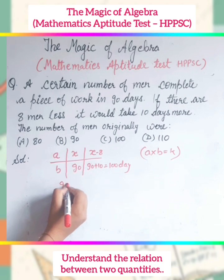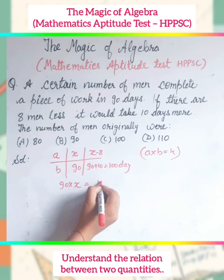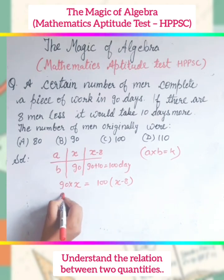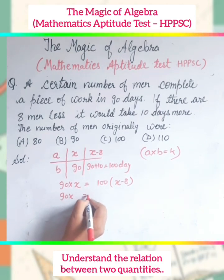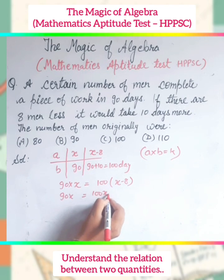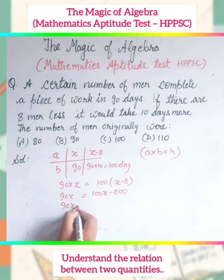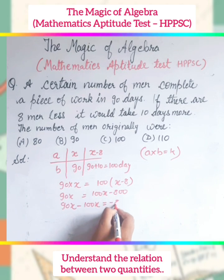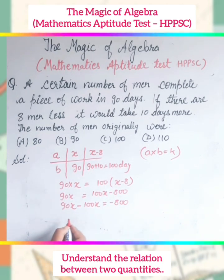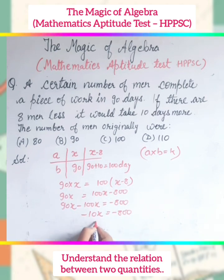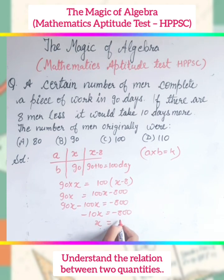90 into X will be equal to 100 into X minus 8. Then 90X is equal to 100X minus 800. Bring this 100 to the left: 90X minus 100X will be equal to minus 800. And minus 10X will be equal to minus 800. And X will be equal to minus 800 upon minus 10.